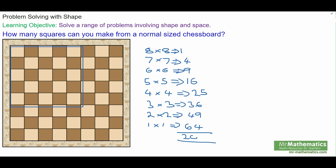So the total number of squares on the chessboard, adding them all up, would be two hundred and four. Thank you very much for watching.